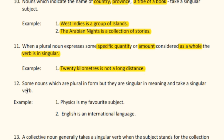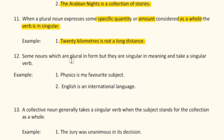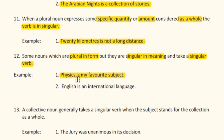Rule number twelve: some nouns which are plural in form but singular in meaning take a singular verb. For example, 'Physics is my favorite subject.' Here the noun 'physics' is plural in form but singular in meaning, so the singular verb 'is' is used. Another example: 'English is an international language.'